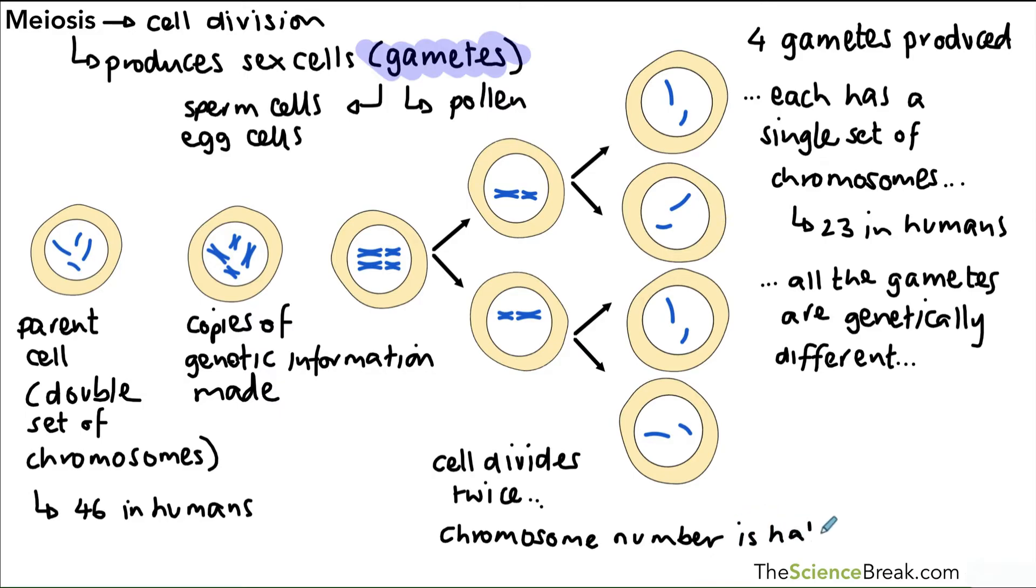That will result in a halving of the chromosome number. The chromosome number halves, going from our double set in the parent cell to a single set in each of the gametes. This is true for every living thing.